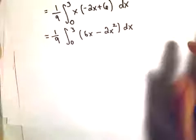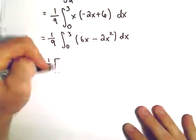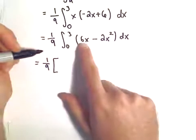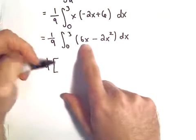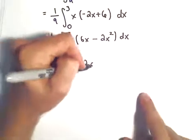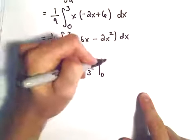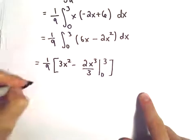Not a terrible integral to evaluate. The antiderivative of 6x, we'll get 6x^2 over 2, or 3x^2. We'll get minus 2x^3 over 3. And now we have to evaluate this from 0 to 3.